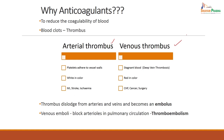In venous thromboembolism, there is stagnation and turbulation. Suppose the flow is not maintained, platelets get activated. For example, deep venous thrombosis is red in color, and you get this kind of deep venous thrombosis particularly in congestive heart failure, cancer with metastasis, or during surgery. So these are two differences: arterial thrombus versus venous thrombosis.